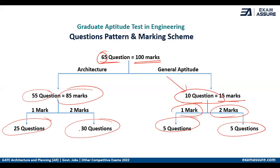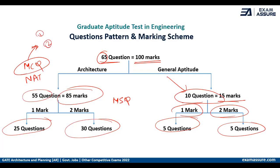Last year, a new scheme was introduced: MSQ. Earlier, it was only MCQ and NAT. MCQ is multiple choice questions — if your answer is correct, you get one or two marks. If it is wrong, a one-mark question will deduct 0.33 and a two-mark question will deduct 0.66.